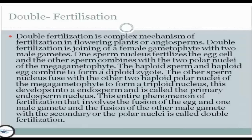We also have double fertilization. Double fertilization is a complex mechanism of fertilization in flowering plants or angiosperms. It involves the fusion of a female gametophyte with two male gametes. One sperm nucleus fertilizes the egg cell, and the other sperm combines with the two polar nuclei of the megagametophyte. The haploid sperm and haploid egg combine to form the diploid zygote.